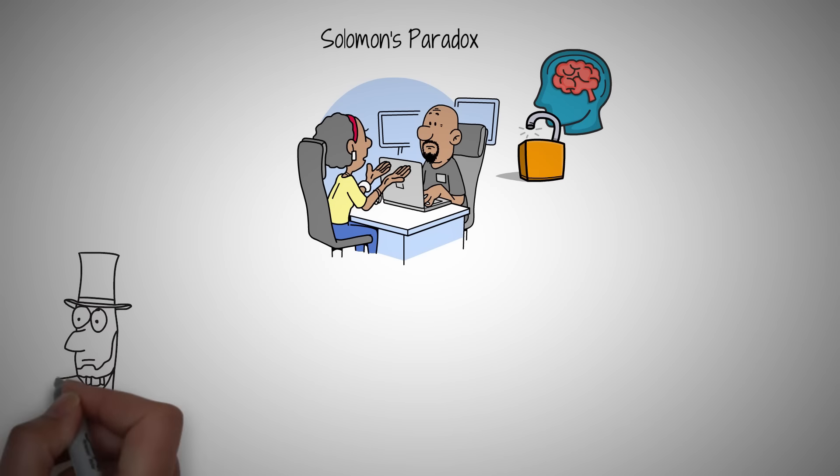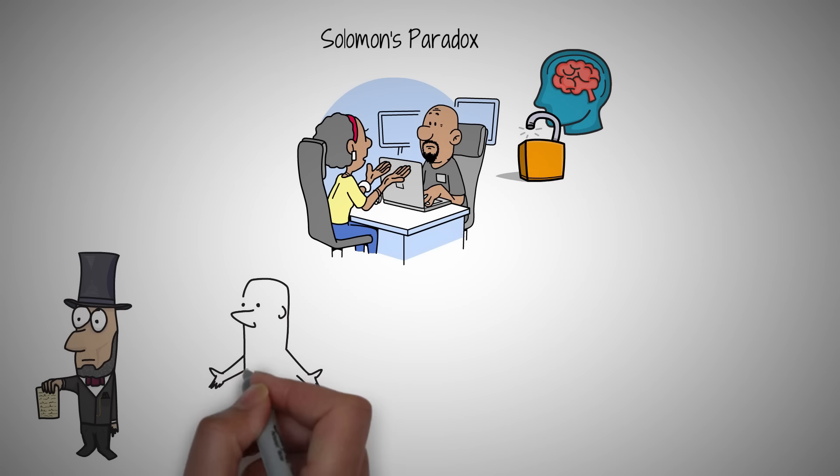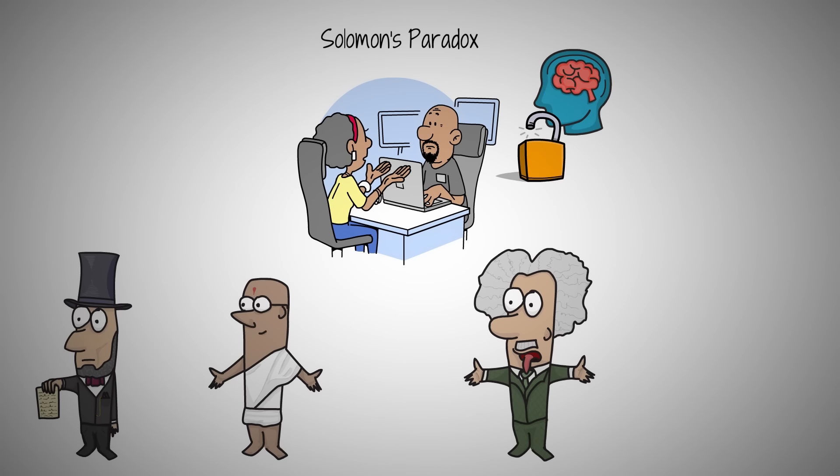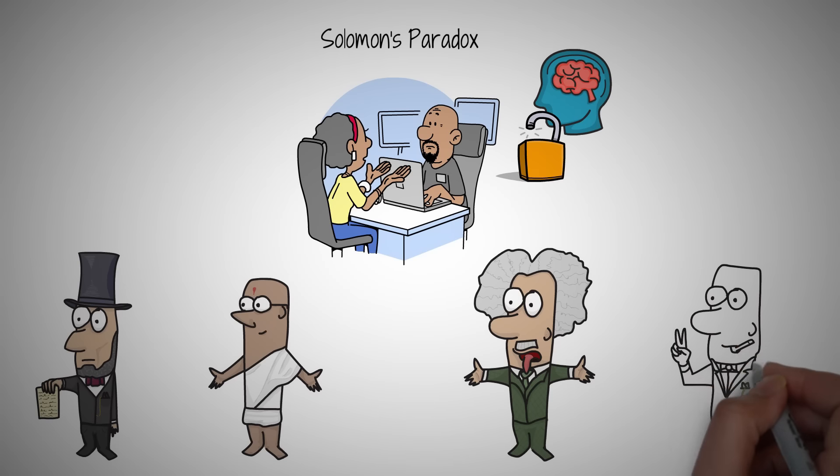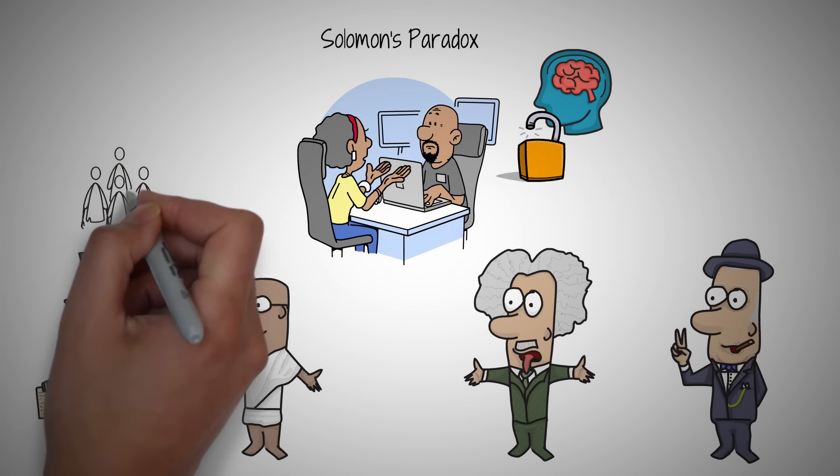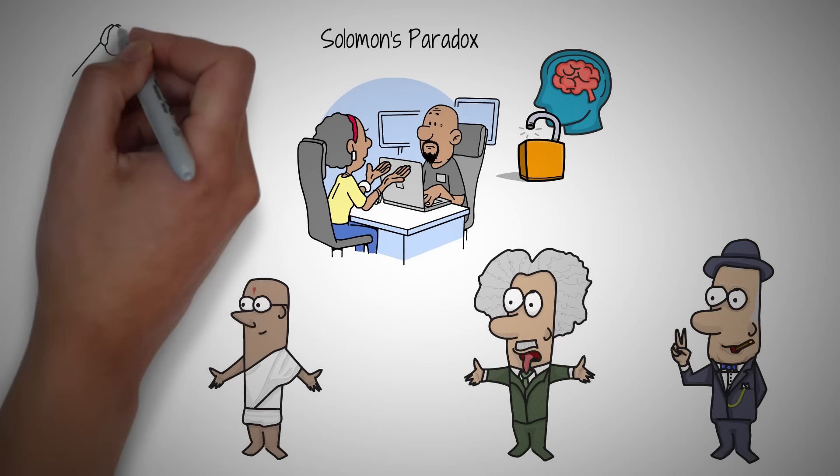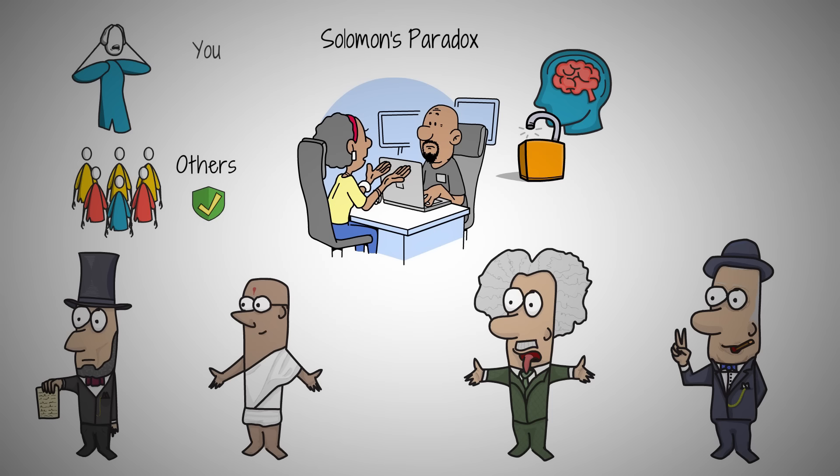Abraham Lincoln led a nation wisely but struggled with personal depression. Mahatma Gandhi worked for peace but had complex personal relationships. Albert Einstein formed groundbreaking theories despite a turbulent private life. Winston Churchill was a brilliant wartime leader but struggled with his personal finances. This is Solomon's paradox in action, which refers to the phenomenon where people are better at solving other people's problems than their own.